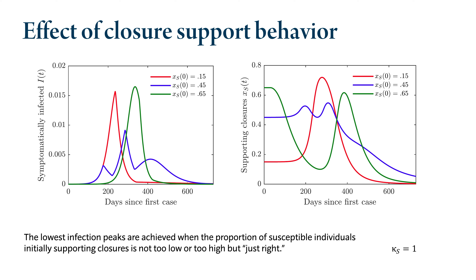Individuals soon realize what has happened, so they start supporting the closure measures again, but it's already too late by that point. For the blue lines — corresponding to the Goldilocks scenario — the initial support for closure measures is present but somewhat lukewarm, so the measures are not enacted too quickly. Yet they are enacted just in time to suppress the first peak of the pandemic. The support then slowly decreases, turning off the measures. This results in a second bigger peak, but the population rebounds back pretty quickly and supports the closure measures once more, allowing the avoidance of large pandemic peaks.